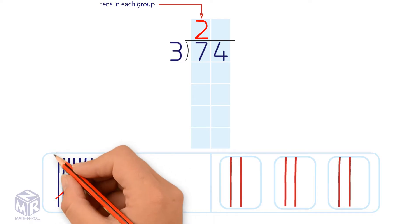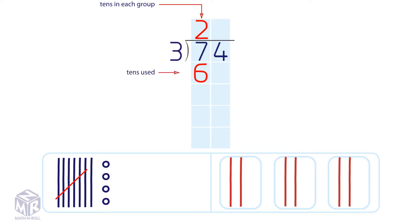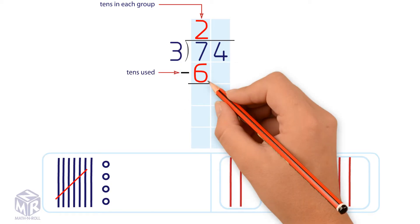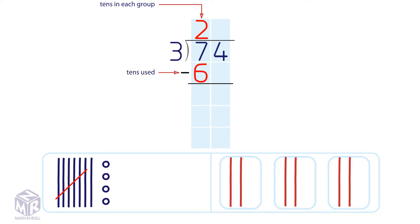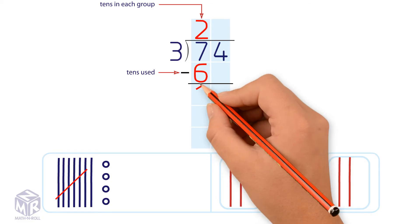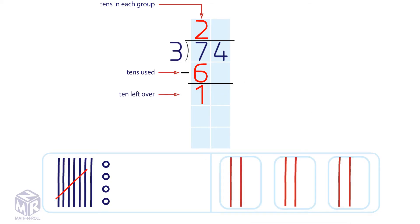6 tens were used. We subtract the tens that we used, 6, from 7. 7 minus 6 equals 1. So we have one 10 left over.